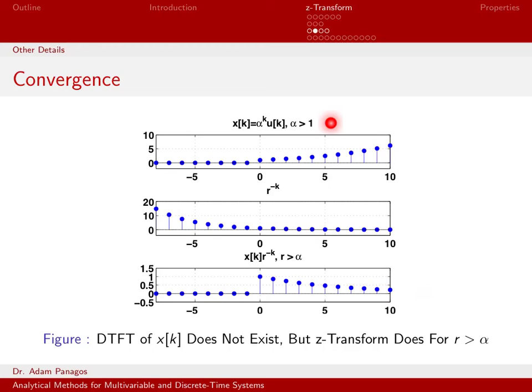However, when we work with the z-transform, we have this free variable r. And what we actually are worried about in terms of convergence of the z-transform is the product x of k times r to the minus k.